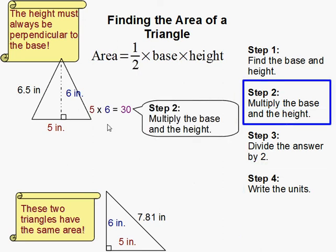Next, we just multiply the base and the height. Like right here in our equation. So for here we have 5 times 6 is 30.